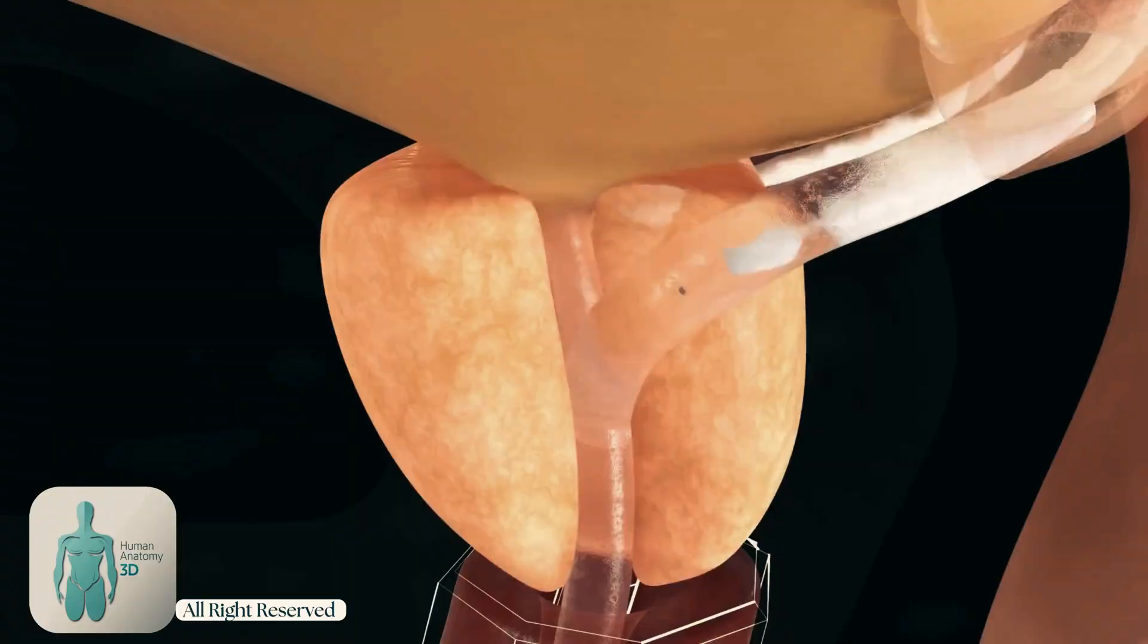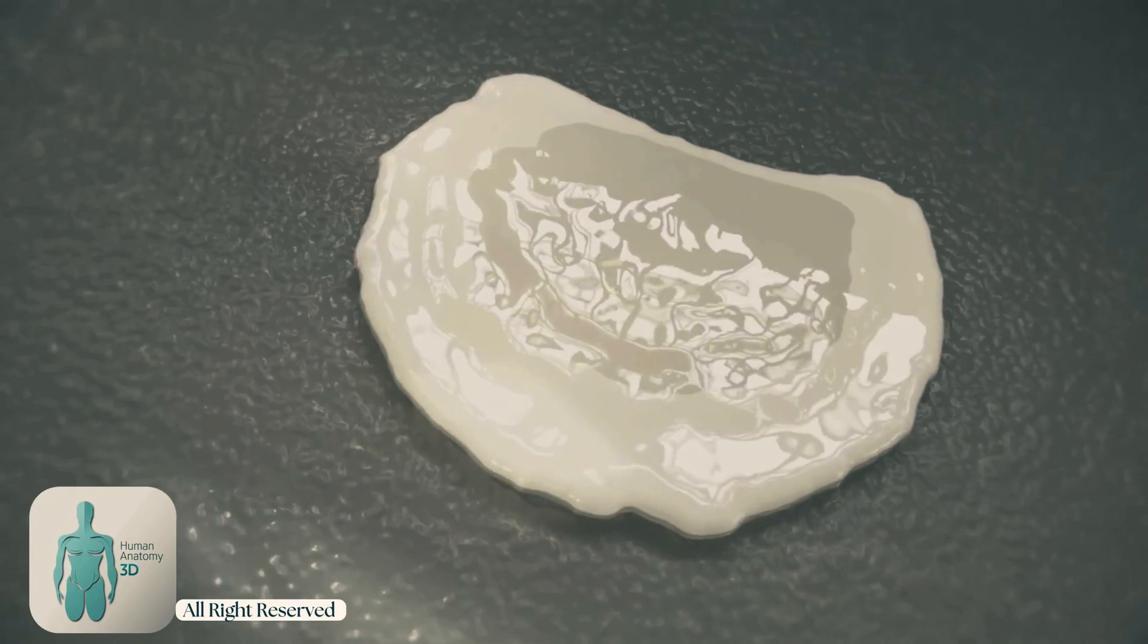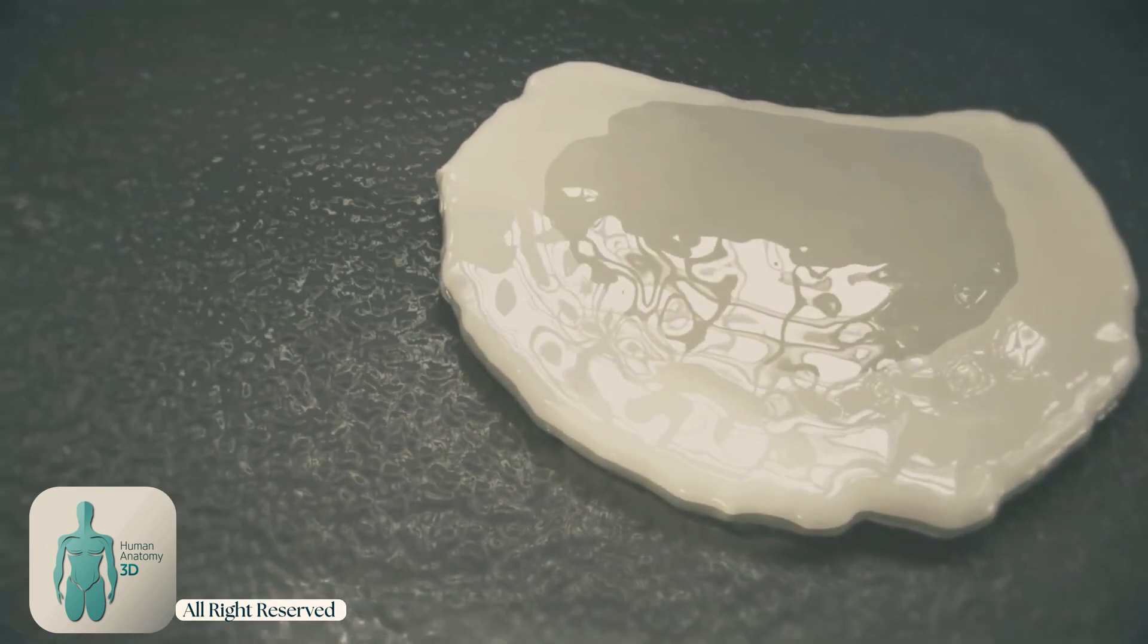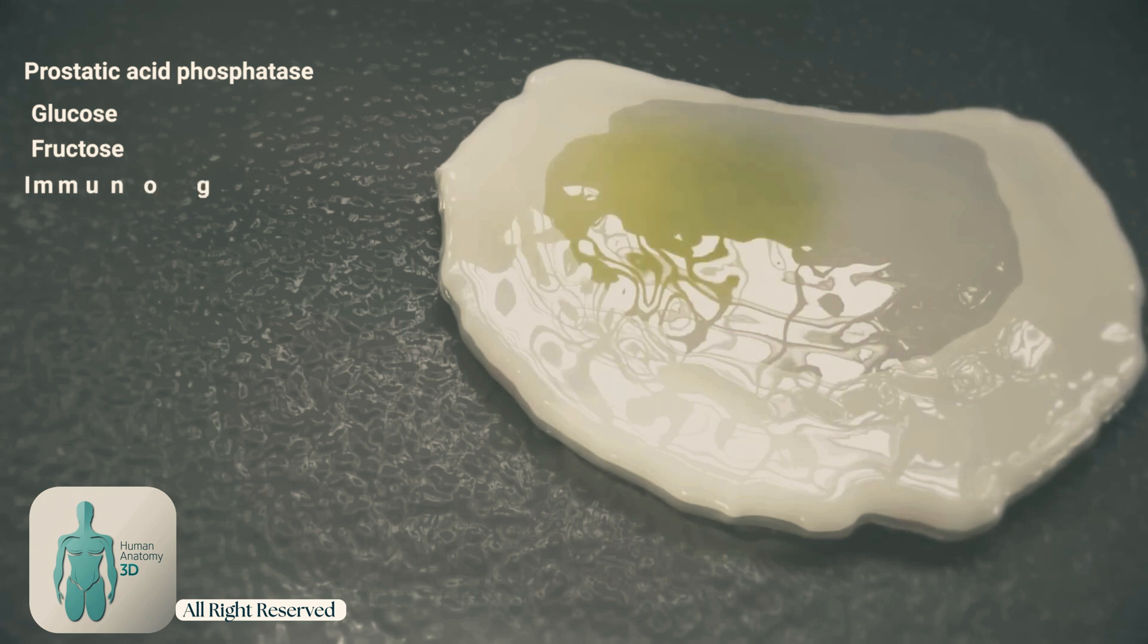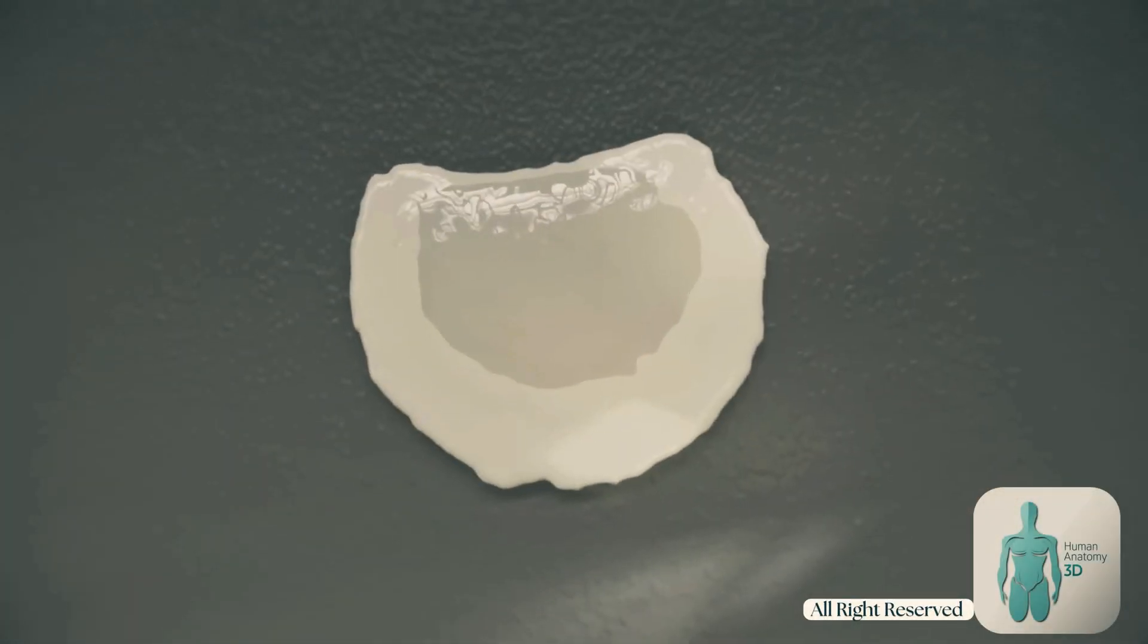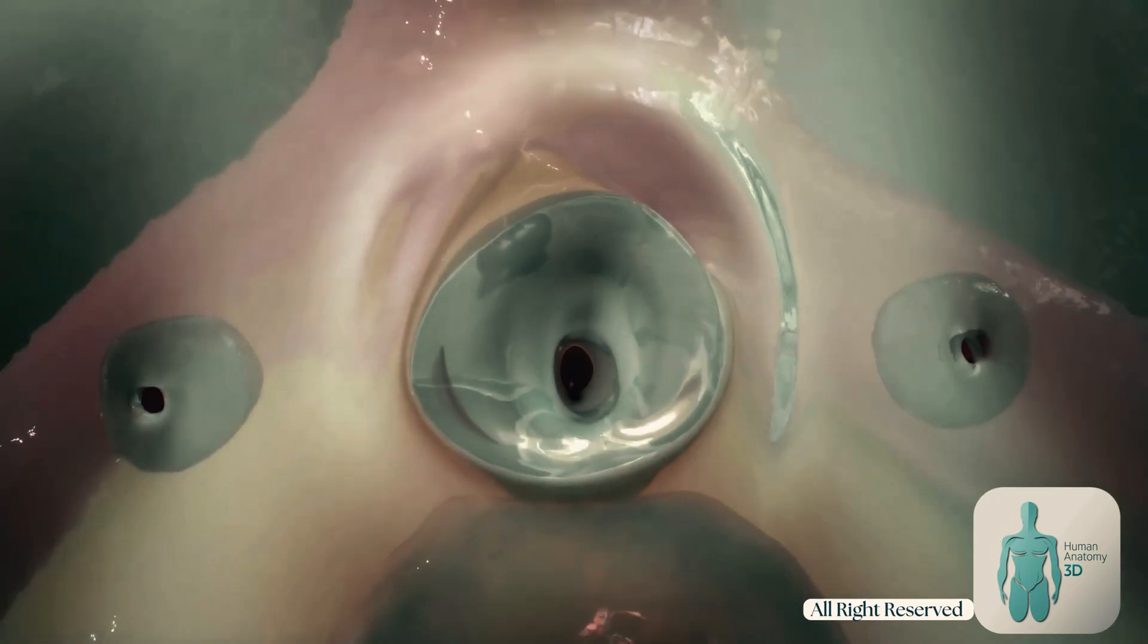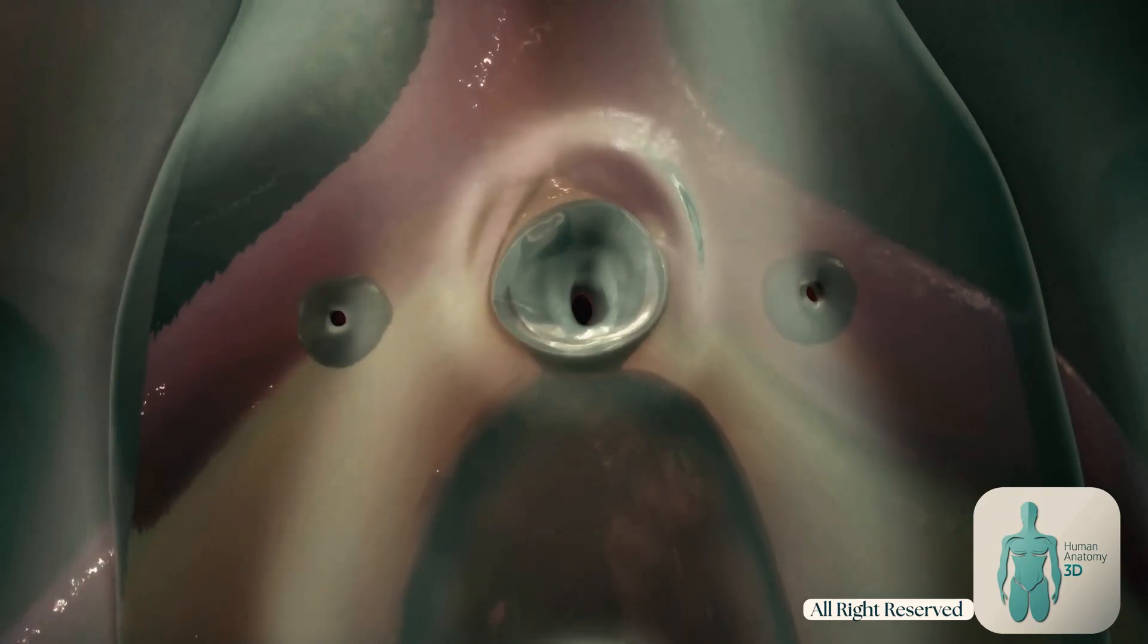The main component is water, which makes up the bulk of Skene's gland secretions and provides a base for other components. Skene's gland fluid also contains electrolytes like sodium, potassium and chloride which help maintain the fluid's balance and electrical conductivity. Prostate-specific antigen, PSA, that is found in male seminal fluid is also present in the Skene's gland fluids.